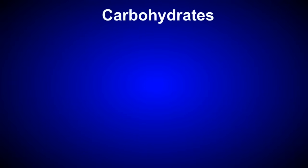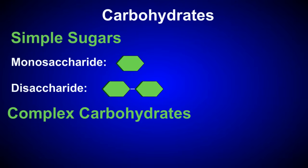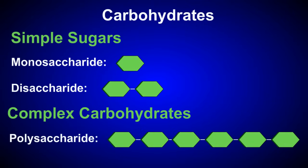Often, we refer to carbohydrates as being either simple sugars or complex carbohydrates. Monosaccharides and disaccharides are commonly referred to as simple sugars, while the term complex carbohydrates refers to the polysaccharides.